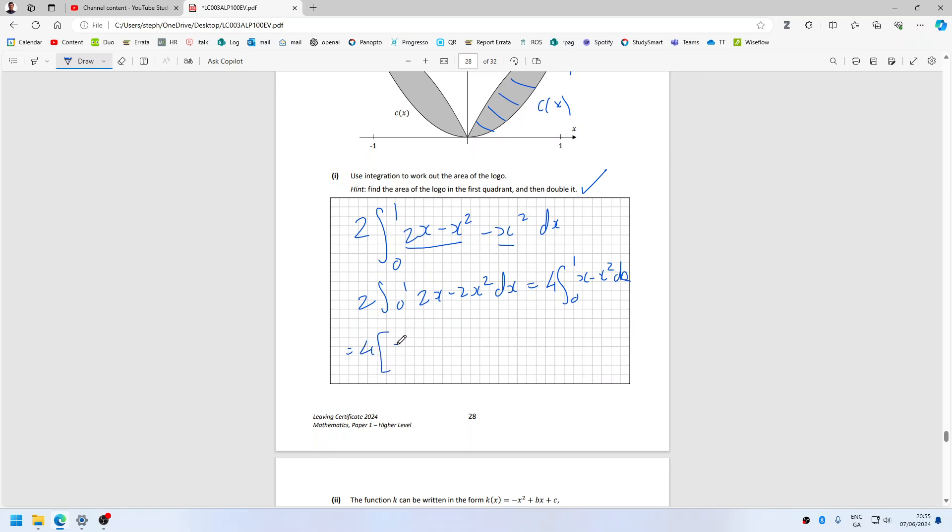So that's 4 times, increase the power by 1, divide by the new power for each term, evaluated from 0 to 1. So that's 4 over 6, isn't it? Because it's a half minus a third, which is a sixth, which is two thirds.